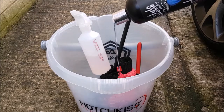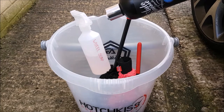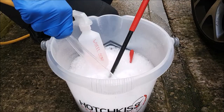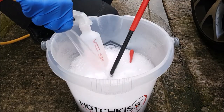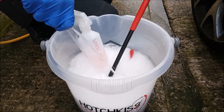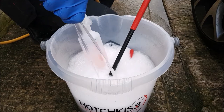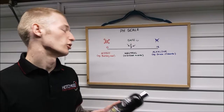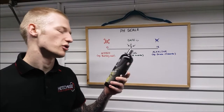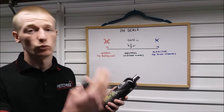A wheel soap is designed to be pH balanced, sitting around pH seven, so it doesn't harm or reduce the effectiveness of any coatings on your wheels. It's not corrosive, so it's not going to break down the coating and weaken it over time.